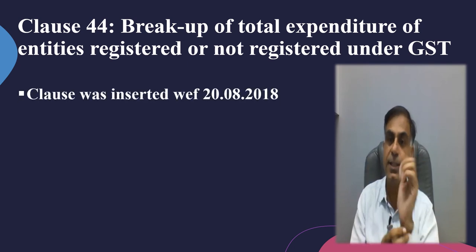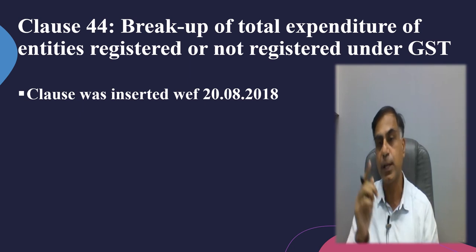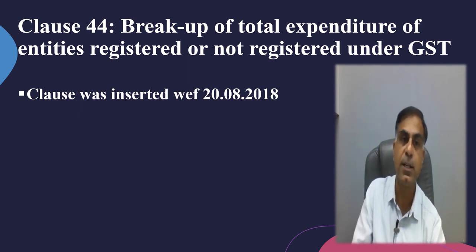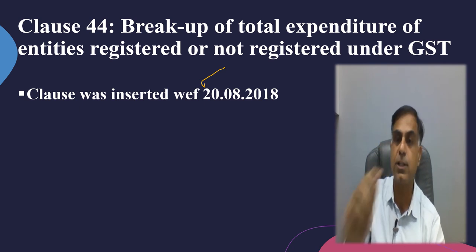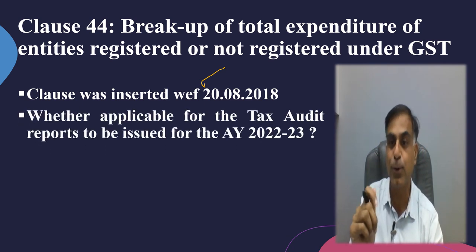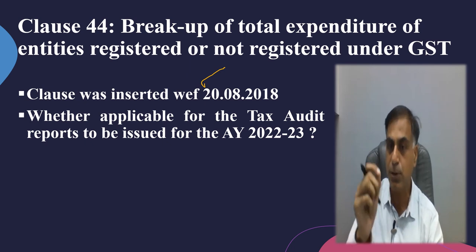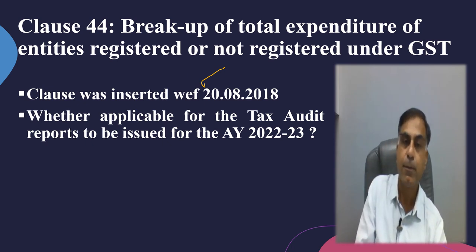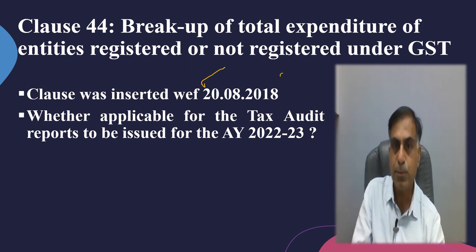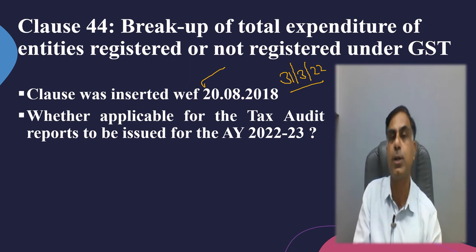If I talk about the insertion of Clause 44 in the Tax Audit report format — that is Form 3CD — this clause was inserted on 20th August 2018. So it is not a new clause; we have been looking at it but not reporting it. Why? Because it has been postponed from time to time, and the last postponement date finished on 31st March 2022.